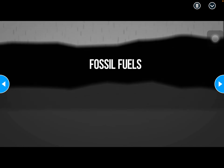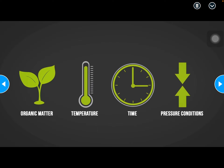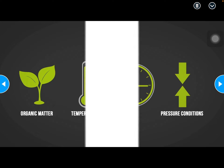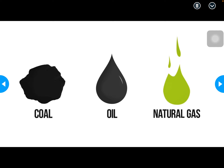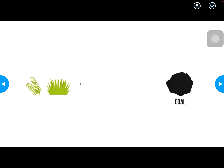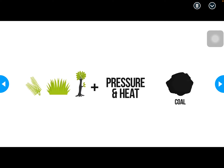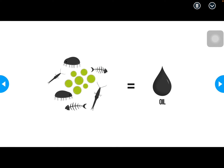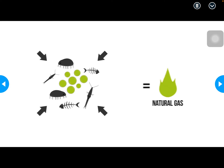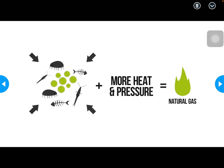Different types of fossil fuels formed depending on the combination of organic matter, temperature, time, and pressure conditions while decomposing. There are three major types of fossil fuels: coal, oil, and natural gas. Coal was formed from ferns, plants, and trees, which hardened due to pressure and heat. Oil was formed from small organisms like zooplankton and algae, where pressure caused the more complex organic matter to decompose. Natural gas was formed by the same process as oil, only it was exposed to more heat and pressure, causing it to further decompose and turn into a gaseous form.